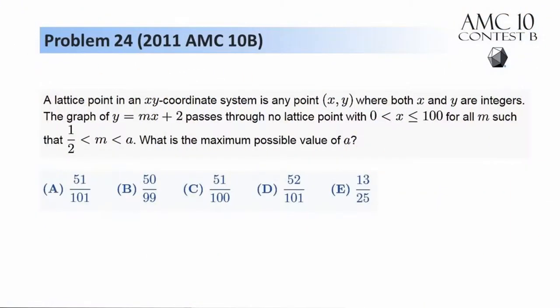Hey everyone, this is Eric Wu. Today we'll be solving Problem 24 on the 2011 AMC 10b. A lattice point in an xy coordinate system is any point where both x and y are integers. The graph of y equals mx plus 2 passes through no lattice point with x greater than 0 and less than or equal to 100, for all m such that m is greater than half and less than a. What is the maximum possible value of a?